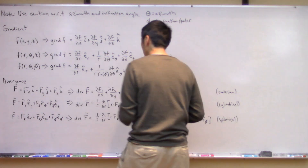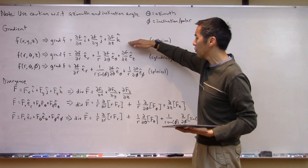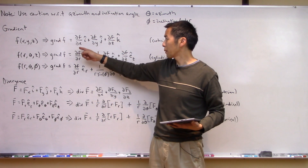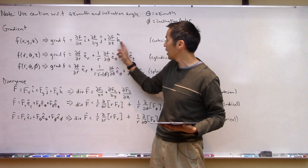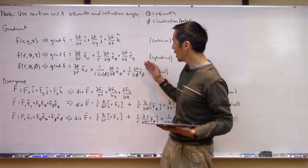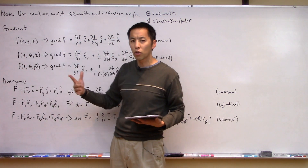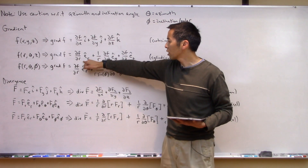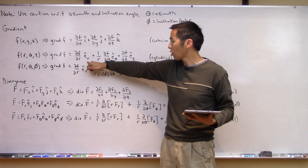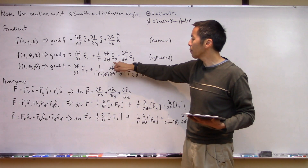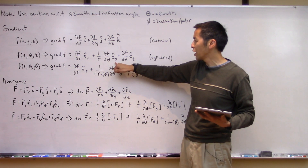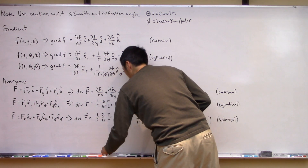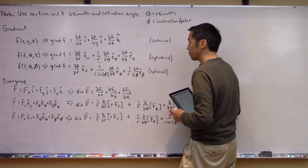For the gradient in cylindrical coordinates: if you describe a function in terms of radius, azimuth angle, and z value, the gradient looks slightly different. The component in the radial direction (e-hat r) is just the derivative of the function with respect to r. The component in the theta direction (e-hat theta) is the derivative with respect to theta multiplied by 1 over r — that's a key difference. The z component stays the same as in Cartesian coordinates.